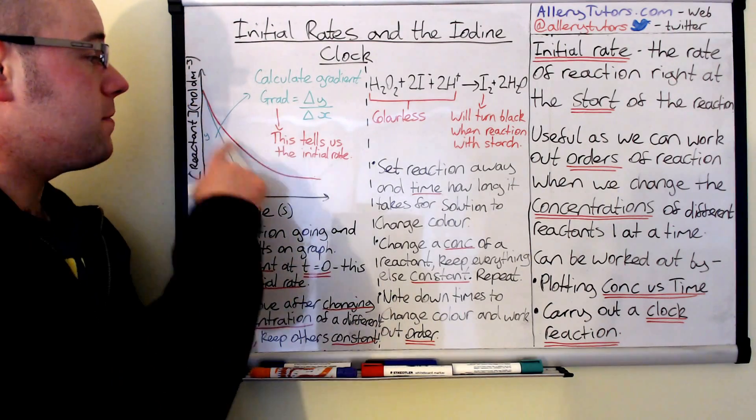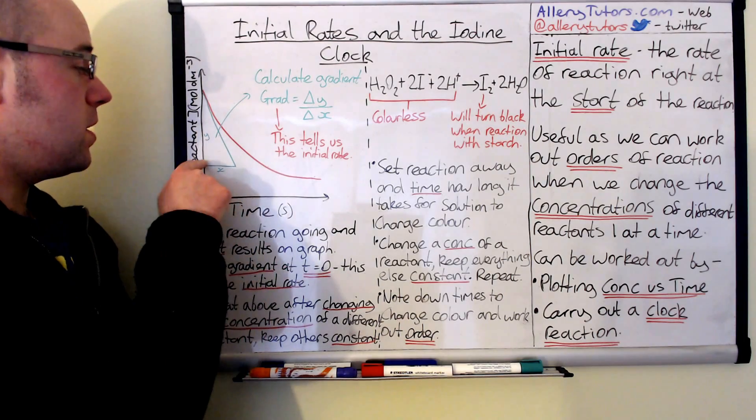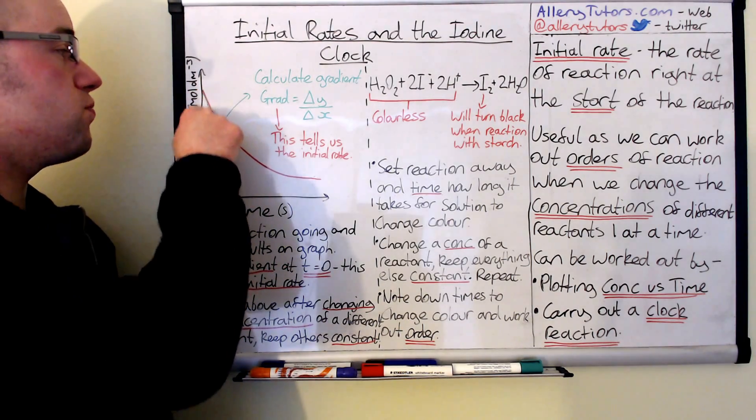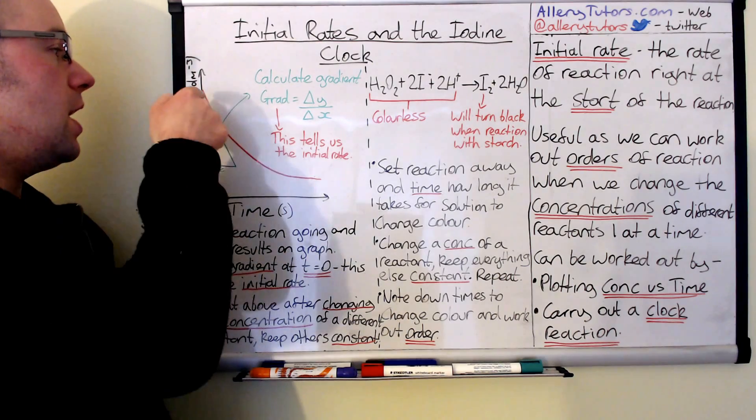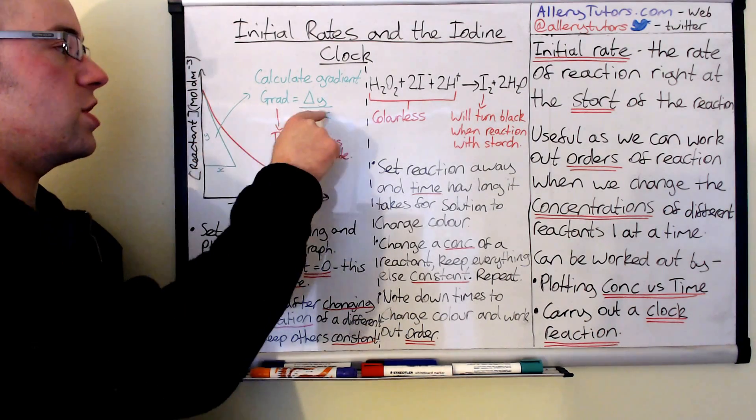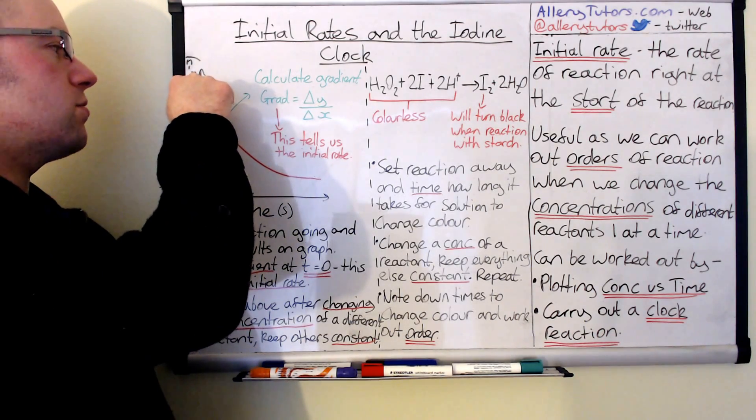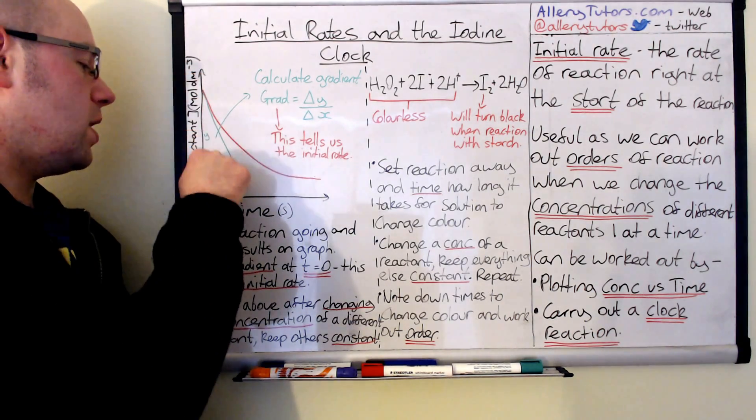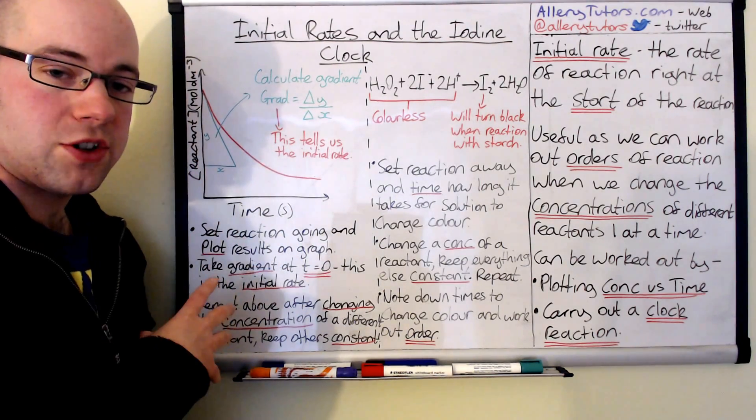We've got a curve here with some data on it and effectively all we're doing is working out the gradient at time zero. This is when the reaction started and what we do when we work out the gradient is the change in y over the change in x. So you draw a triangle like this, there's the gradient line there, and this will tell us the initial rate for this reaction.